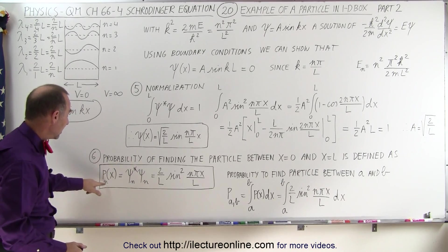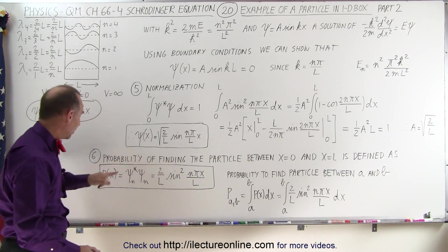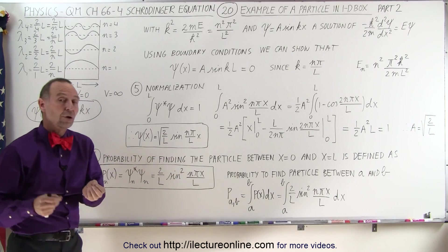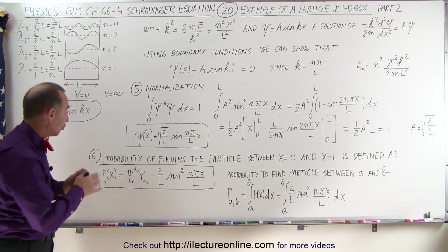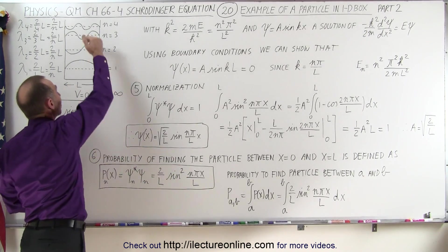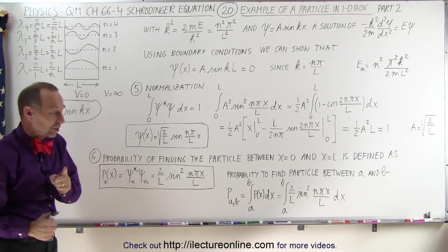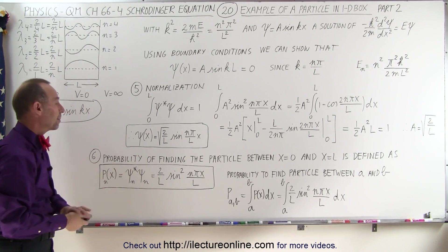Notice that for n equals one, we turn that into a one, for n equals two, we turn that into two, so the probability function does really depend upon what energy level we're in, and for each energy level, we have a different probability function.